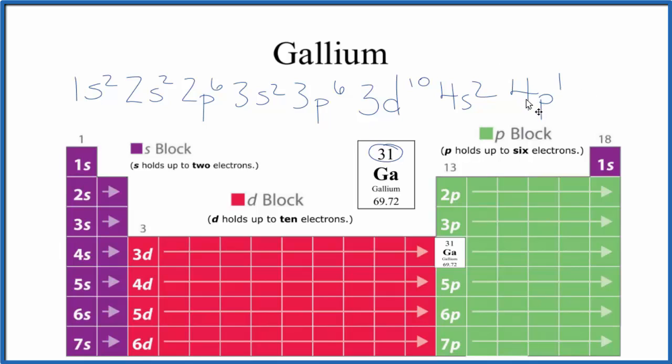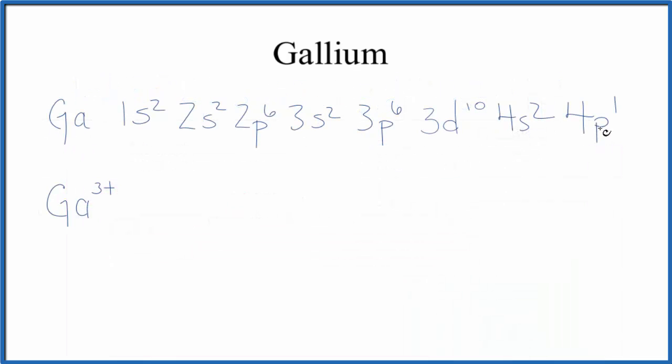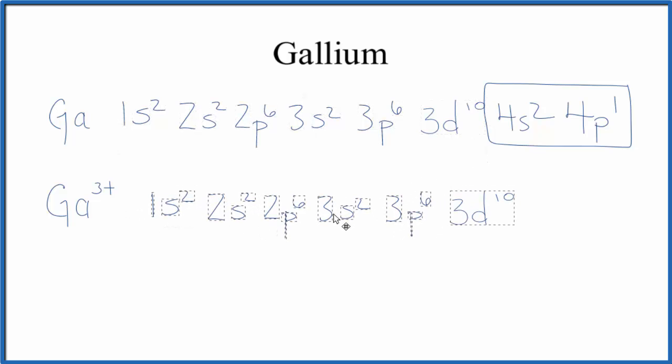Now let's do the ion that gallium forms when it makes bonds with other atoms. So this is our neutral gallium, as it's found on the periodic table. When it forms chemical bonds, it'll lose these valence electrons here. So it'll lose these valence electrons, and we'll end up with an electron configuration like this for the gallium ion.